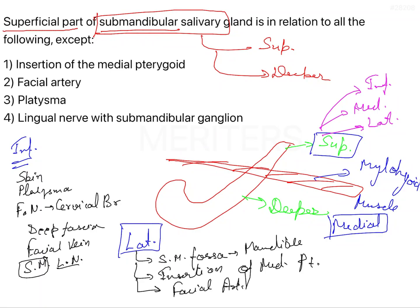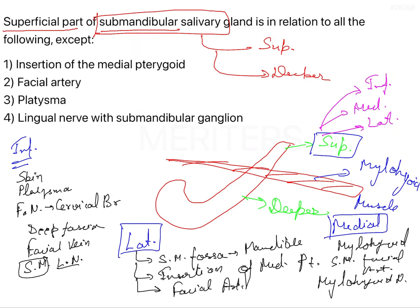The medial surface has many relations. The important ones are: the mylohyoid muscle, the submental branch of the facial artery, the mylohyoid nerve, hyoglossus, styloglossus, and the lingual artery, among other structures.